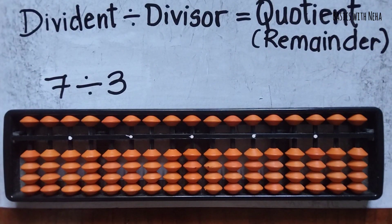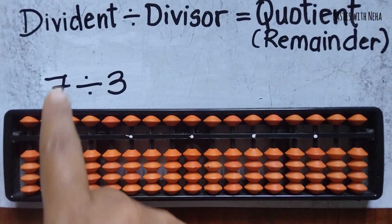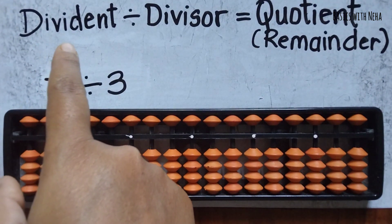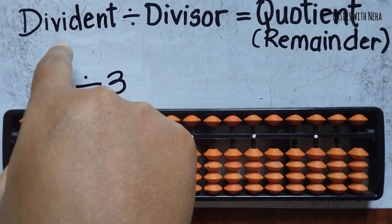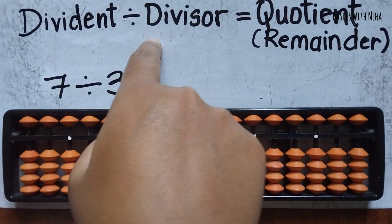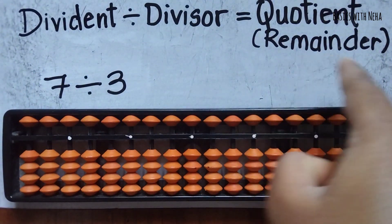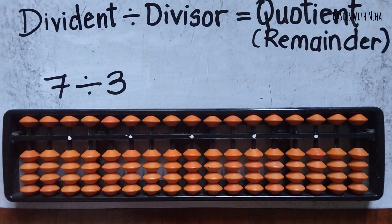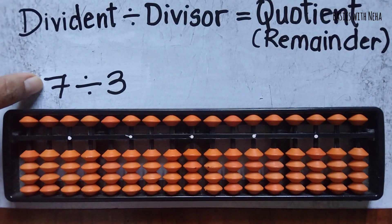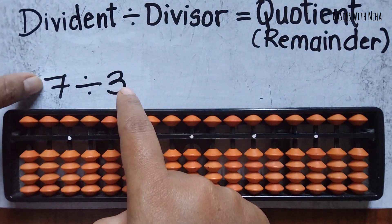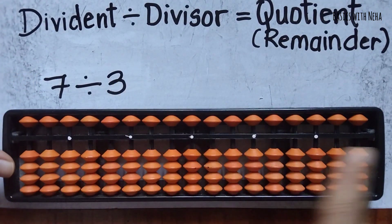Hello, welcome back to my YouTube channel. In today's video we are going to do division using the abacus tool. The parts of division are: dividend divided by divisor equals quotient and remainder. Let's start with one-digit dividend divided by one-digit divisor.